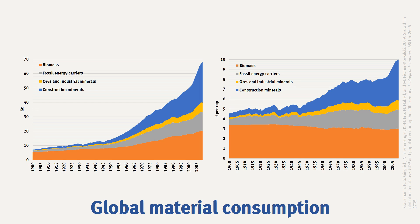In contrast with total extraction, biomass consumption per capita remained stable or even decreased a bit over the last century, whereas construction materials still increased significantly. We can conclude from this graph that per person we consume more to build cities and infrastructure than to feed ourselves.